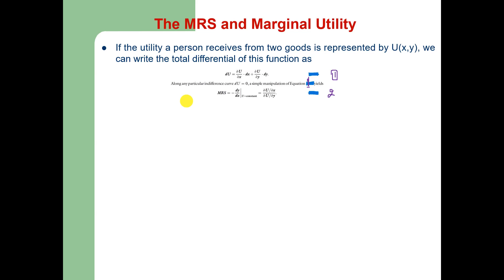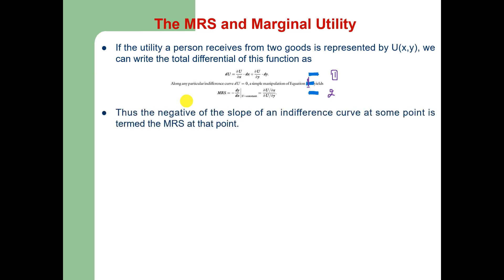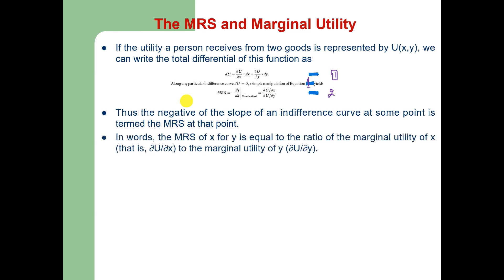A simple manipulation of this equation yields that the marginal rate of substitution is equal to the negative of the slope of the indifference curve where utility is held constant, and that in turn equals the partial of u with respect to x — which is the marginal utility of x — divided by the partial of u with respect to y — which is the marginal utility of y. Therefore, the marginal rate of substitution of x for y equals the ratio of their marginal utilities.